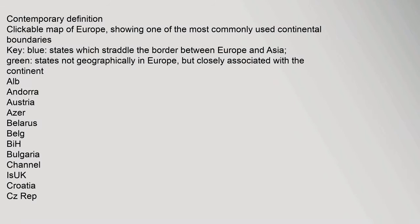Contemporary definition: a clickable map of Europe showing one of the most commonly used continental boundaries. The key indicates in blue the states which straddle the border between Europe and Asia, and in green the states not geographically in Europe but closely associated with the continent.